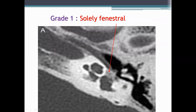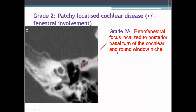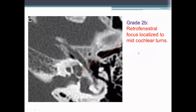Grade 1 as shown in the figure is solely fenestral, involving the oval window area, with a hypodense area in the oval window region showing the otosclerotic foci. In grade 2a, there is a retrofenestral focus localized to the posterior basal turn of the cochlea. This is the medial turn of the cochlea. In grade 2b, the mid-turn of the cochlea is involved. As shown in the figure, the aditus, malleus, body of the incus, short process of the incus, and mastoid cavity area are visible landmarks on these CT images.